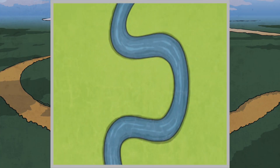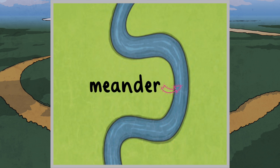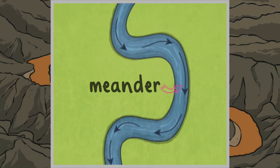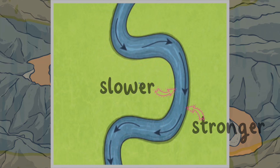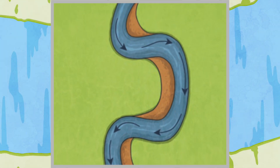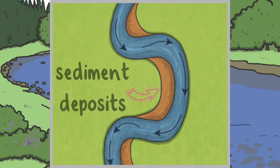On flatter land, a river will take twists and turns, which is called meandering. The flow of the river water is stronger on the outside of bends and slower on the inside. Where the water flow is faster, land is eroded or worn down. Where the water flow is slower, particles of rock and sand, known as sediment, are deposited.